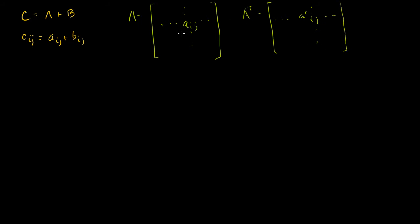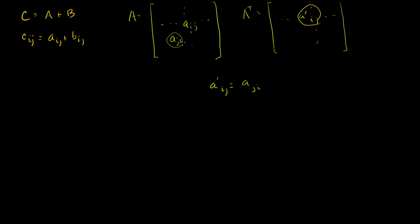The fact that this is the transpose of A means that everything in some row and column here is going to be in that column and row over there — the rows and columns get switched. So we know that A prime ij is going to have the same entry that was in A ji.